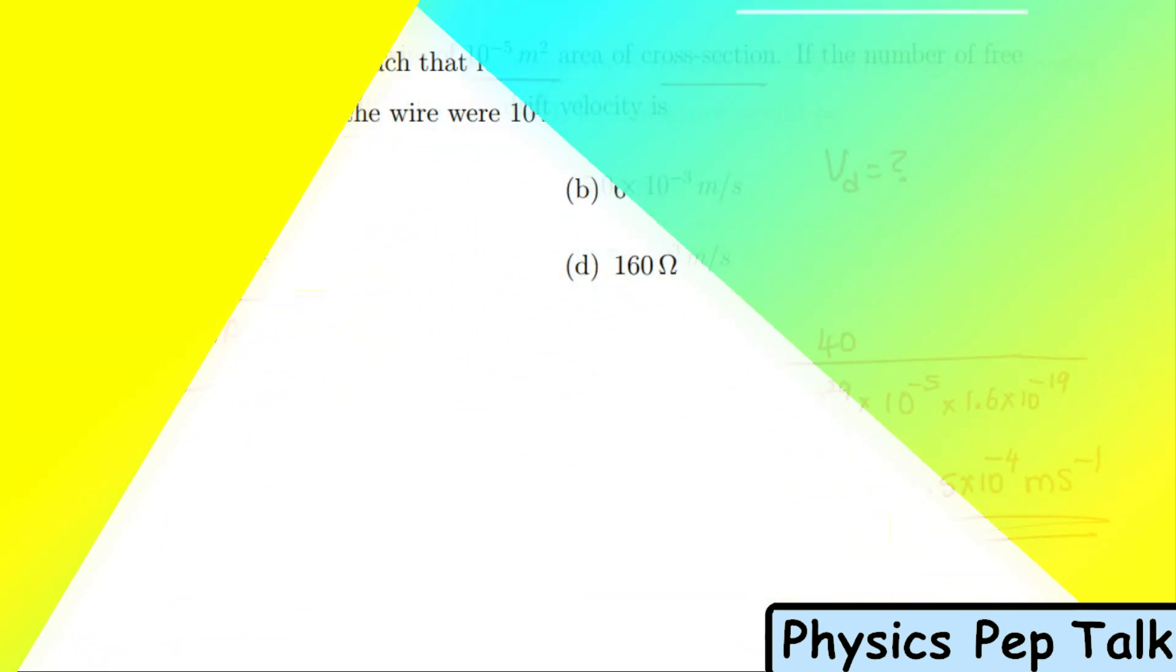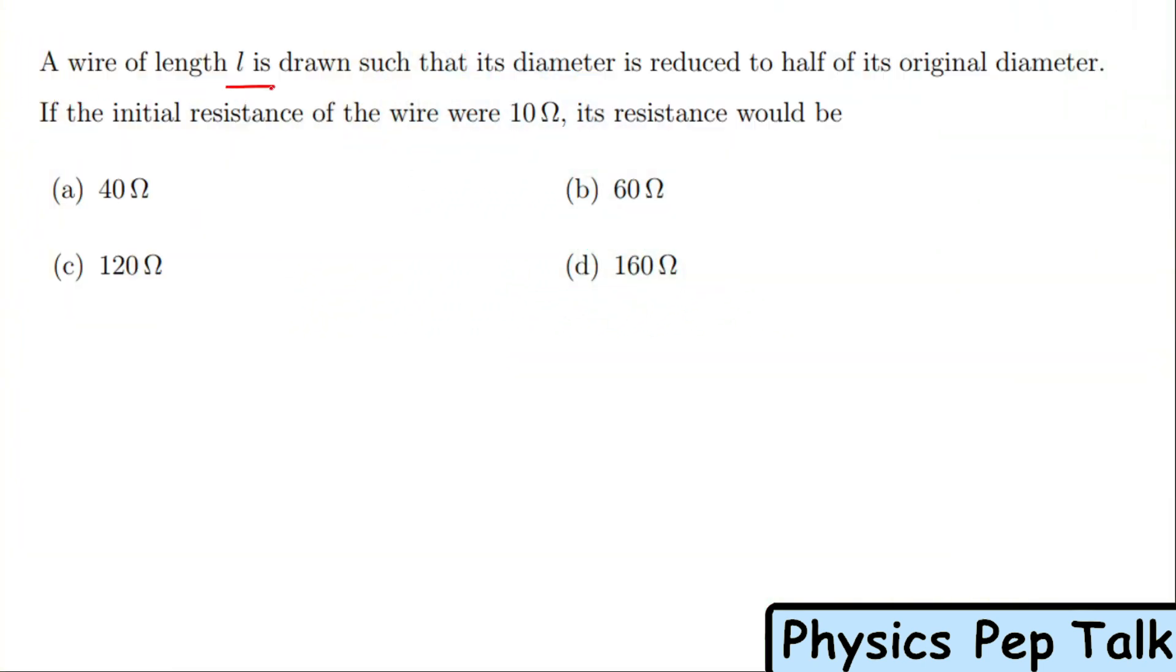Next question: A wire of length L is drawn such that its diameter is reduced to half of its original diameter. If the initial resistance of the wire is 10 ohms, its resistance would be. Assume a wire of length L and diameter D. If this wire is stretched, diameter D becomes D' which equals D/2, reduced to half.